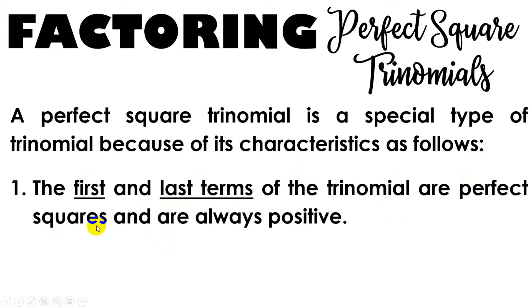When we say perfect square, these are the terms that have a square root. And aside from that, our first and last term must always be positive. Let's have some examples. We have x squared, again, perfect square because the exponent is divisible by 2. We have 36a to the 4th. The exponent 4 is divisible by 2.